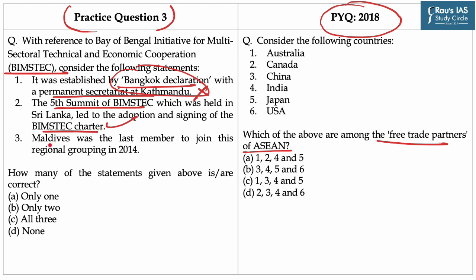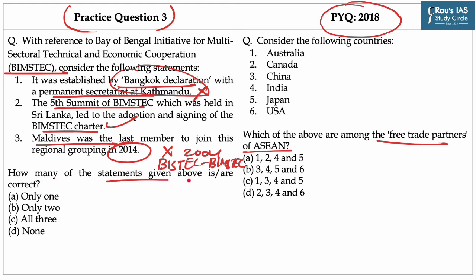Statement 3: Maldives was the last member to join this regional grouping in the year 2014. This statement is incorrect because Nepal and Bhutan were the last members admitted to this grouping in the year 2004, and hence the name of this organization changed from BIMST-EC to BIMSTEC. How many of the statements are correct? Only one statement is correct, hence option A is the correct answer. Whereas the PYQ is concerned, option C was the right answer.